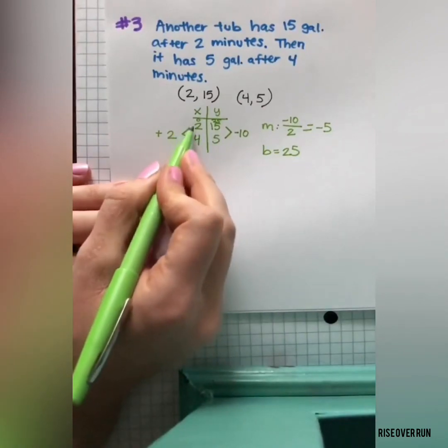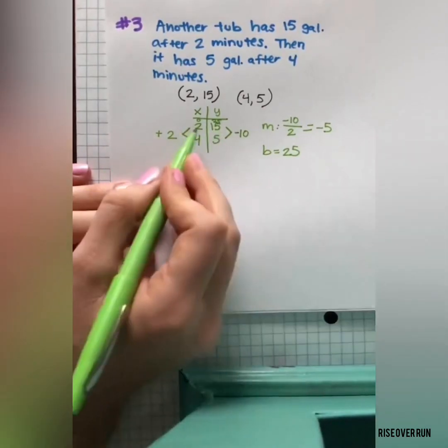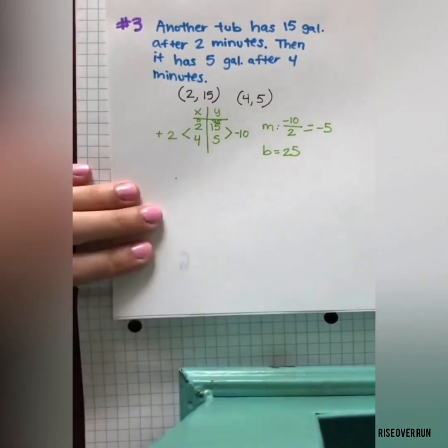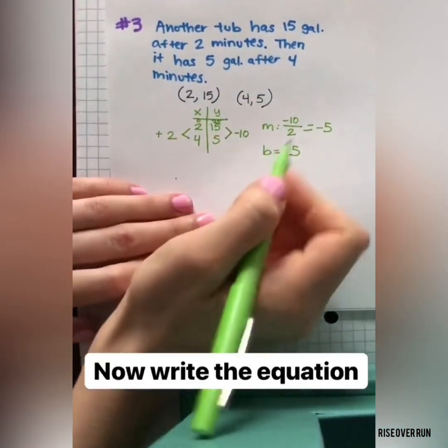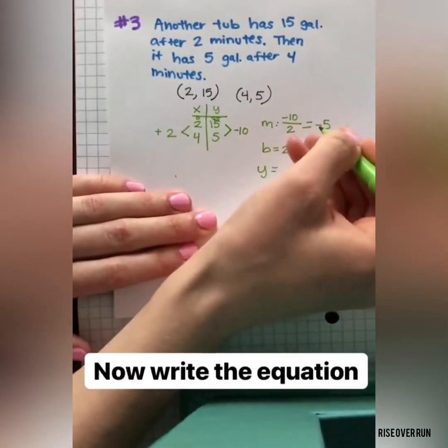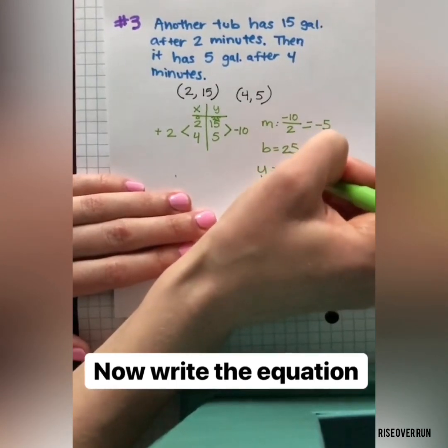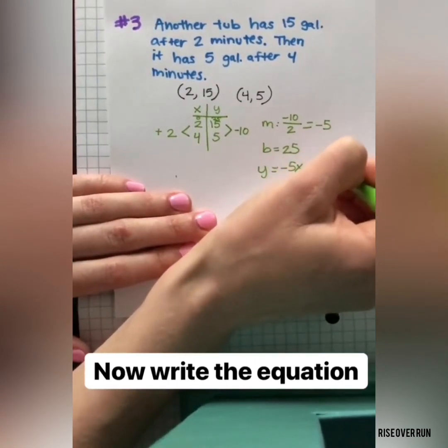So my b value is 25. I'm just following this pattern here. If this is 2's and this is 10's, I can add 0 to the table. Now that I have m and b, y equals mx plus b.